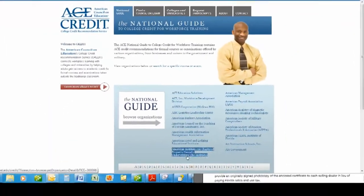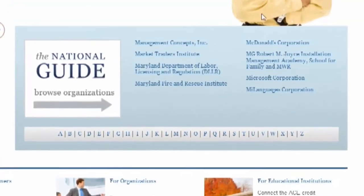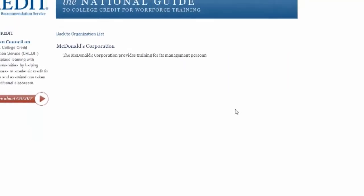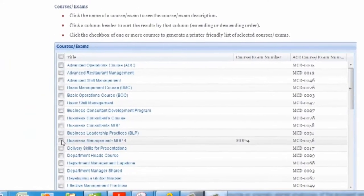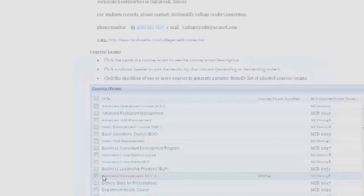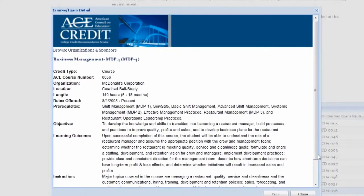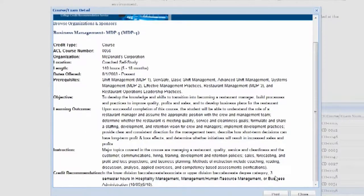The American Council on Education, ACE, may have already evaluated the training you completed and recommended it for college credit. Research ACE. Dig up those training certificates and submit the documentation to your college. If credits are granted, you just saved a lot of time and money.